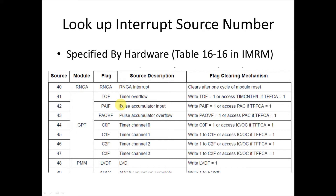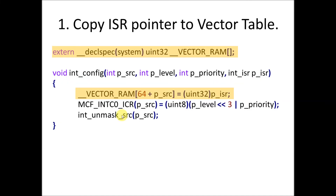Once we have the interrupt service routine, the code to register it in the vector table is right here. Vector RAM is an externally defined memory location — basically an array of 255 32-bit pointers to functions in the system. The first 64 are used by the exception system for system errors. Numbers 64 through 255 are used for the peripheral interrupt system. Since peripherals start counting at 1, we add the peripheral source number to the offset of 64, giving us an index into the vector table where we copy our ISR pointer.